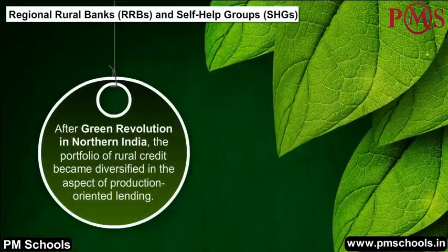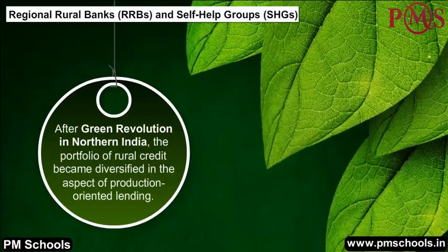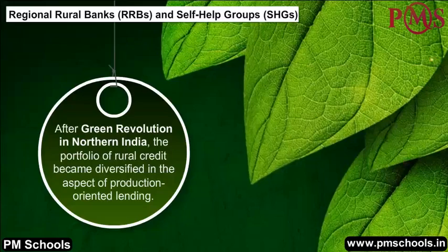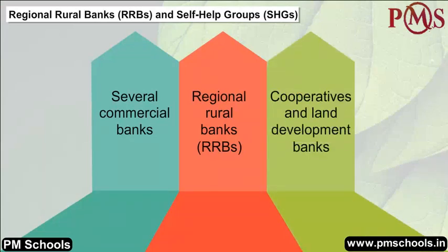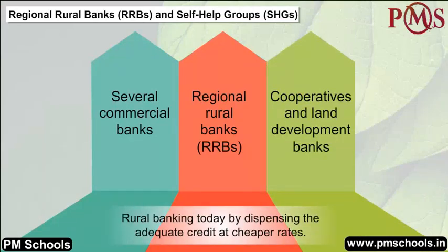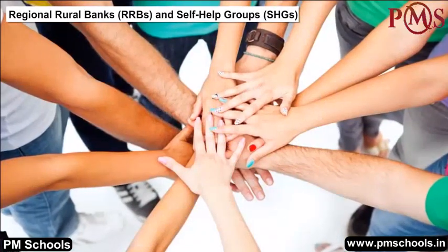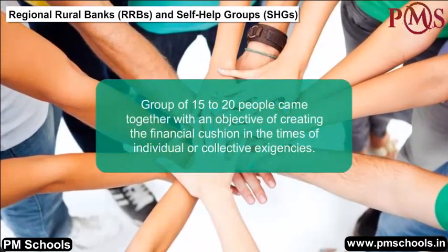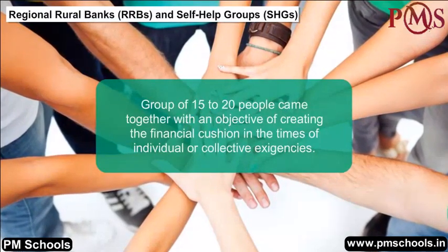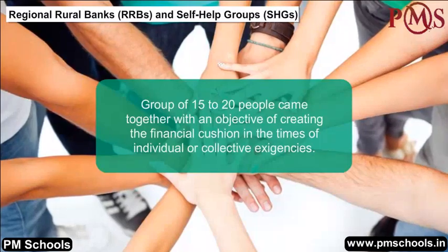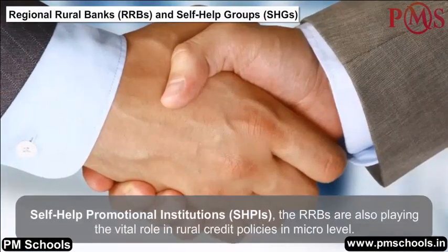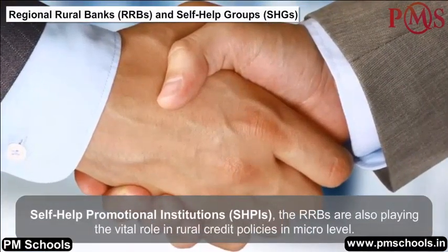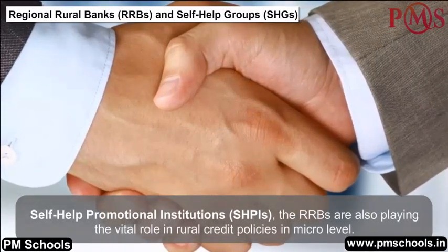After the Green Revolution in Northern India, the portfolio of rural credit became diversified in the aspect of production-oriented lending. Several commercial banks, Regional Rural Banks (RRBs), and land development banks have structured rural banking today by dispensing credit at cheaper rates. Self-help groups consist of groups of 15 to 20 people who came together to create a financial cushion in times of individual or collective need. By creating Self-Help Promotional Institutions (SHPIs), RRBs also play a vital role in rural credit policies at the micro level.